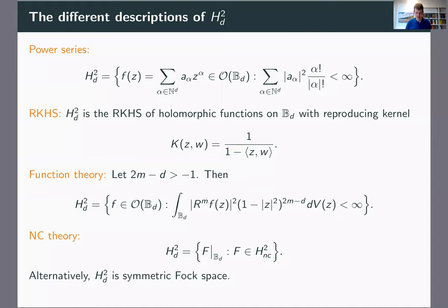We can think of it as a space of power series where the power series coefficients belong to some weighted L2 space with these weights. You can think of it as a reproducing kernel Hilbert space with a very natural reproducing kernel. We can think of it as what's called a Besov-Sobolev space, where you demand that a certain number of radial derivatives is in L2 with respect to an appropriate weight. We also have this NC point of view, where you take functions in the NC Hardy space and restrict them to level one.